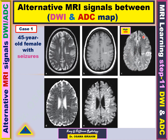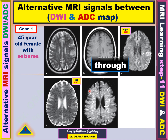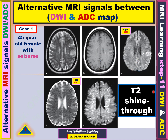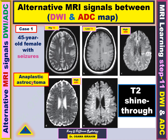This is the diffusion-weighted image, which shows CSF as low signal and white matter darker than gray matter. There is an abnormal high signal in the left parietal lobe. This is the ADC map, where CSF appears bright and the lesions also appear as high signal in the same region. When both diffusion and ADC are high, this is called T2 shine through. The T2-weighted image shows CSF bright and white matter slightly darker than gray matter.